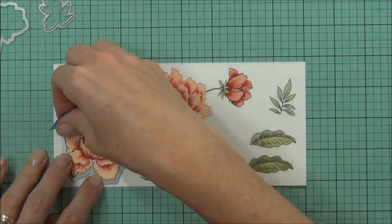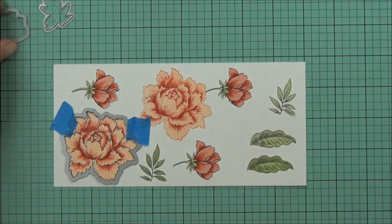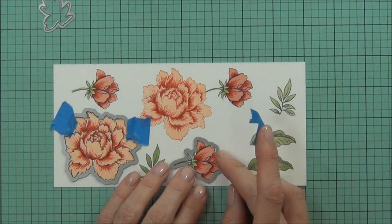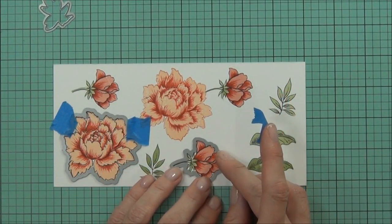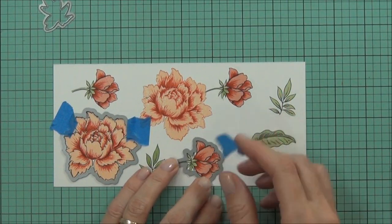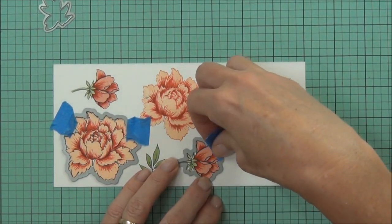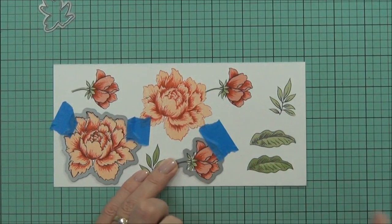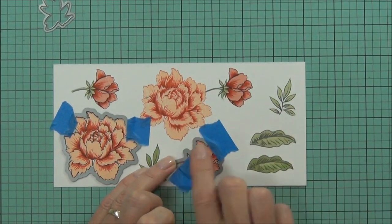But what I wanted to show you is that you can actually cut multiples at once. If you don't stamp your images too close together, you can adhere your dies down just with some low tack tape and run a few through your die cutting machine all at the same time. It just saves time really.